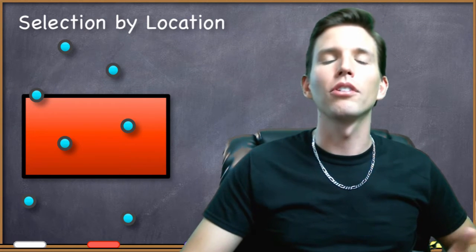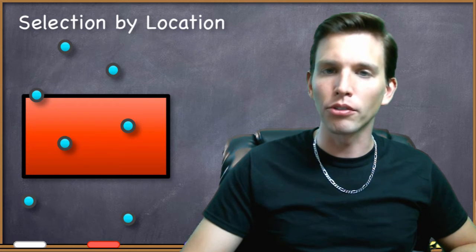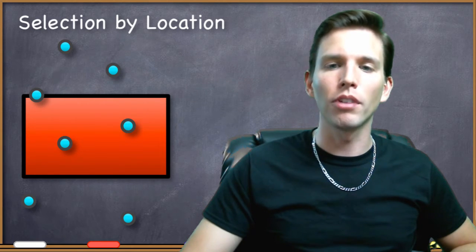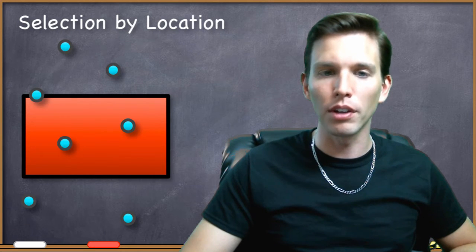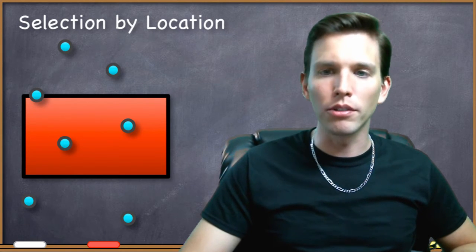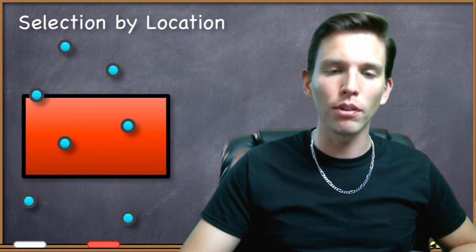From there, of course, because the geometry and attributes are linked, once you select your features based on their spatial location, you can take a look at the attribute table, see what's selected, and find out what kinds of characteristics those features have. This might allow you to discover very important patterns and relationships between locations and characteristics.